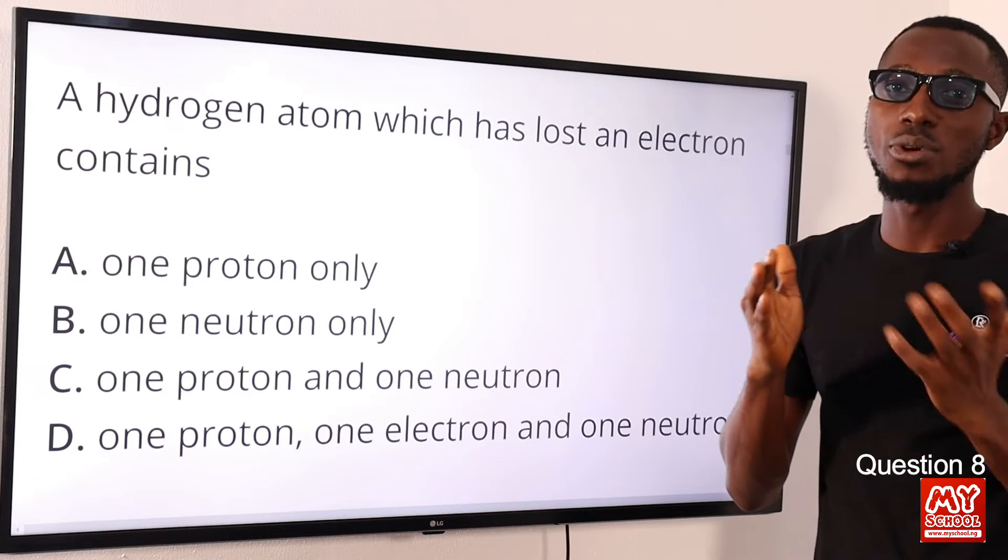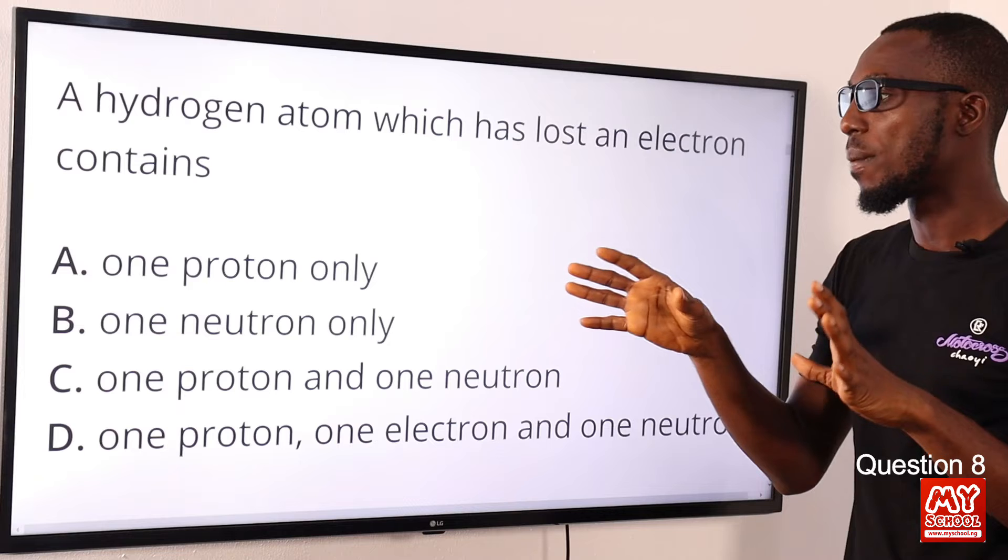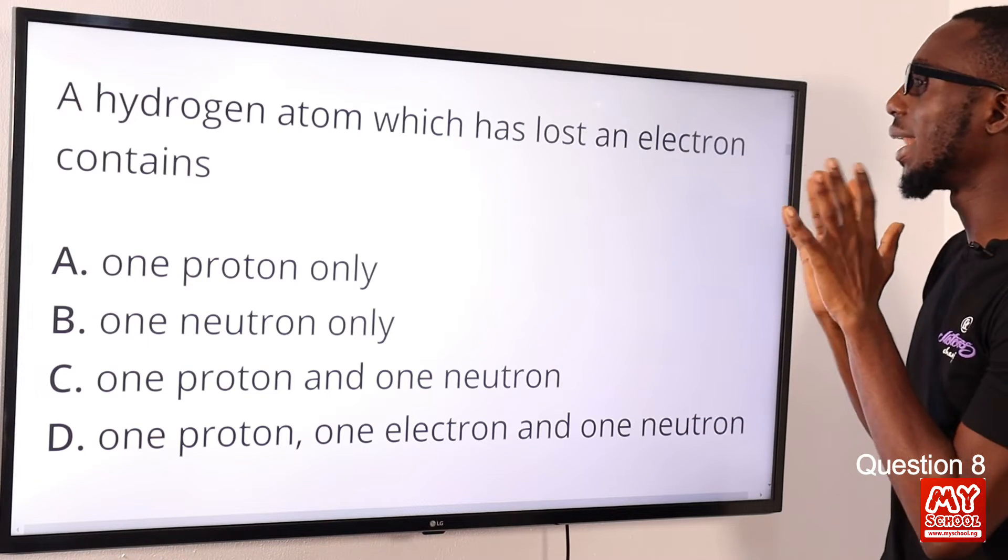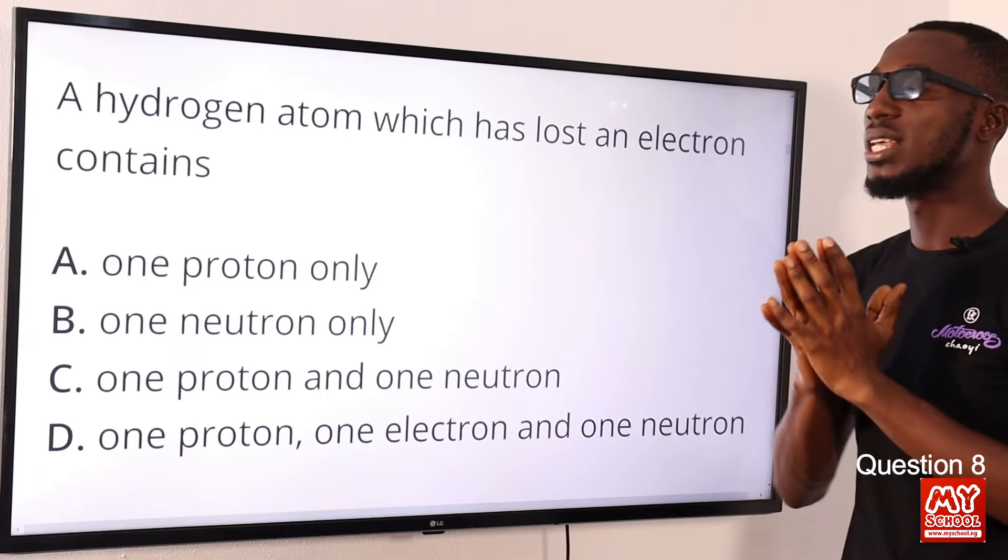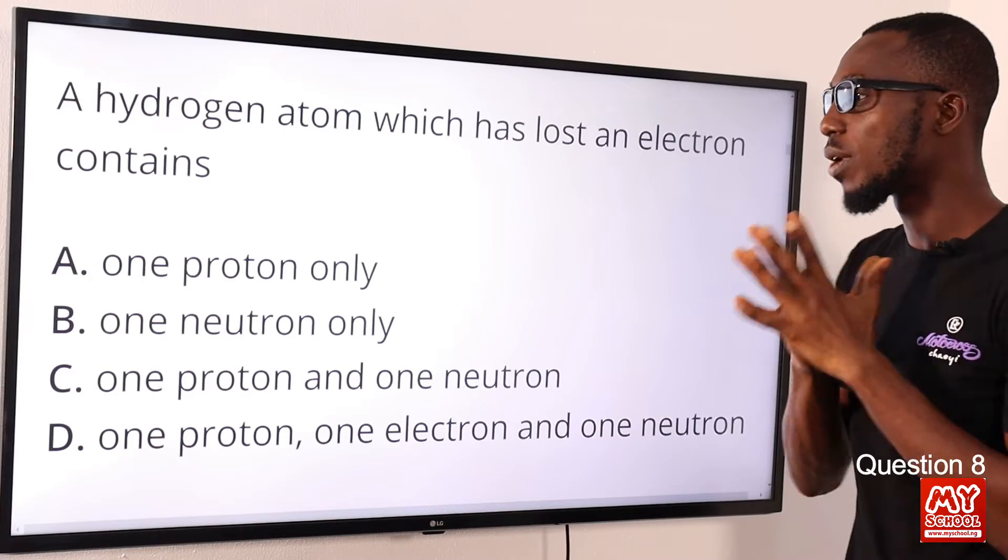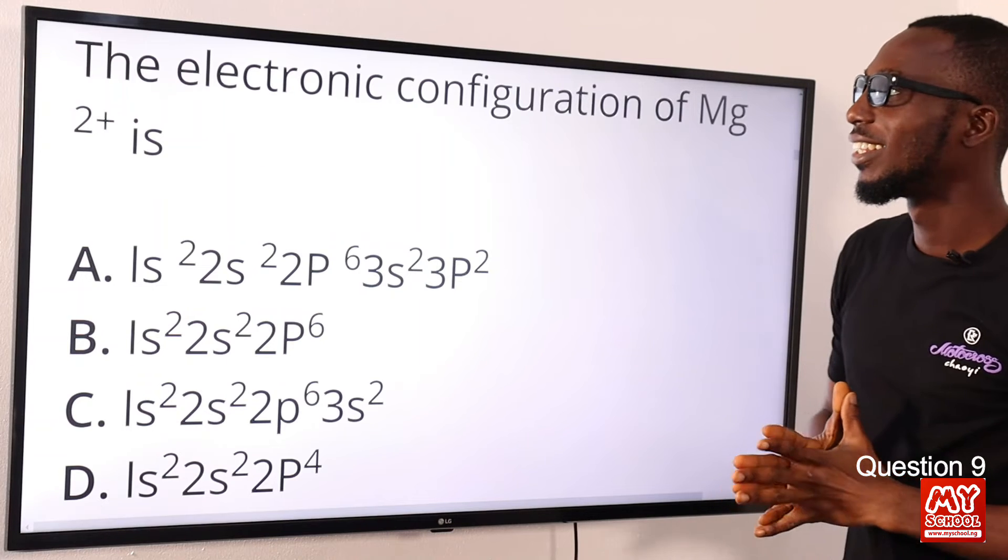Coming back to the question: a hydrogen atom which has lost an electron—it has lost an electron, so what it has left is just the proton inside the nucleus and no neutron. The correct option would be option A: one proton only.